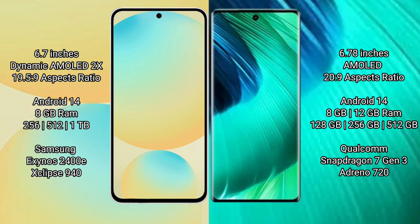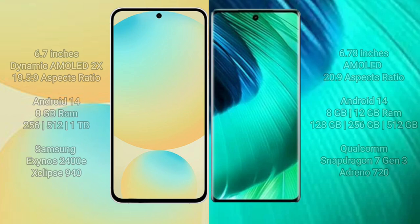Samsung Galaxy S24 FE comes with 8GB RAM and 128GB, 256GB, or 512GB internal storage, with an Exynos 2400 processor and GPU 940. Vov30 comes with 8GB or 12GB RAM and 256GB or 512GB internal storage, with a Qualcomm Snapdragon 713 processor and GPU 720.